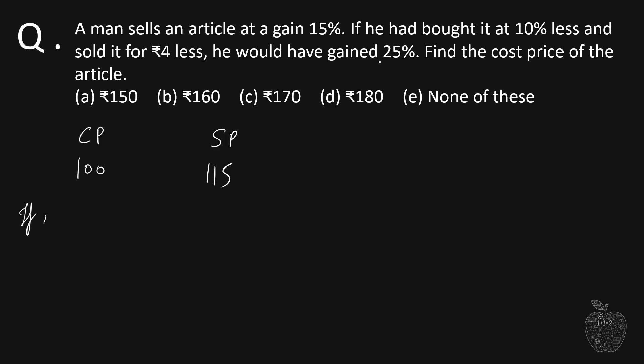If he had bought it at 10 percent less, originally it is 100, he bought it at 10 percent less, that means 90. And sold it for 4 rupees less, he would have gained 25 percent. If he had bought it at 90, he would have gained 25 percent.